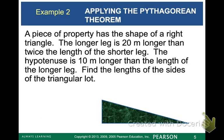A piece of property has the shape of a right triangle. The longer leg is 20 meters longer than twice the length of the shorter leg. The hypotenuse is 10 meters longer than the length of the longer leg. Find the lengths of the sides of the triangular lot.